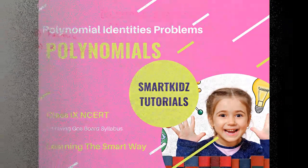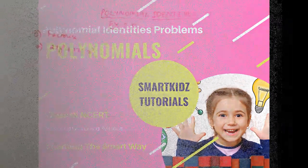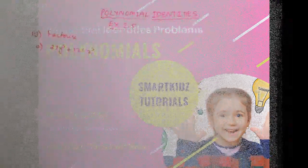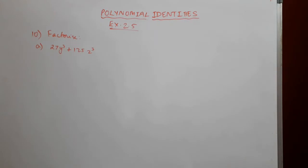Hello students. In this video we will solve problems based on Exercise 2.5 of the Polynomials chapter, Class 9. We are on Question 10, which says: factorize the following. The first problem is 27y³ + 125z³.